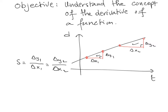Therefore, the slope may be used to measure the variation of D in terms of T. If D is a distance in meters and T is time in seconds, the unit of the slope S will be meters per second, and therefore the slope indicates the rate of change of D in terms of T.